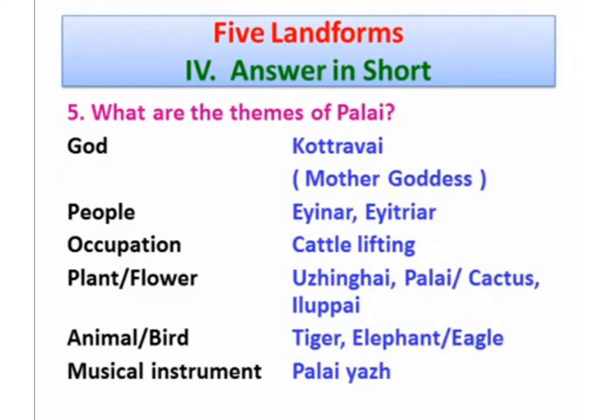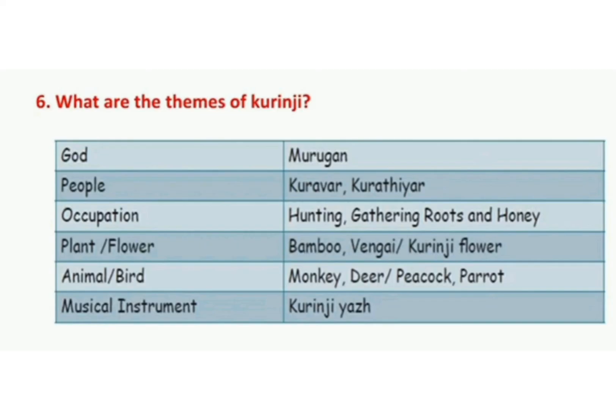Number six: what are the themes of Kurunji? God: Murugan. People: Kuravar, Kurathiyar. Occupation: Hunting, Gathering roots and honey. Plant and Flower: Bamboo, Vengai, Kurunji Flower. Animal: Monkey, Deer. Bird: Peacock, Parrot. Musical Instrument: Kurunji Yawl.